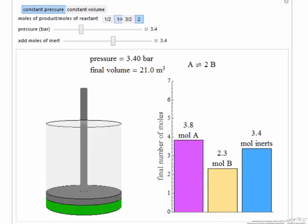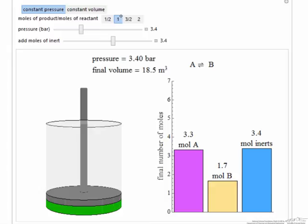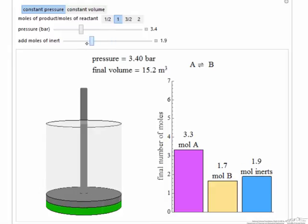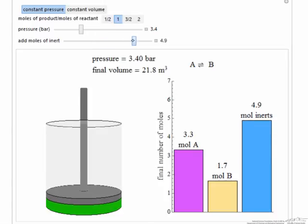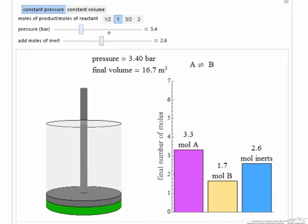If I instead look at 1 mole of A forms 1 mole of B, this is a gas phase reaction where the inert doesn't make a difference because we don't have a mole change, so pressure doesn't affect the reaction.